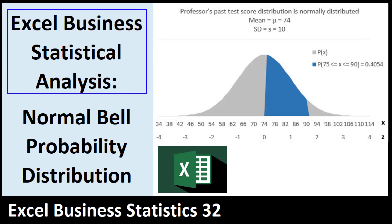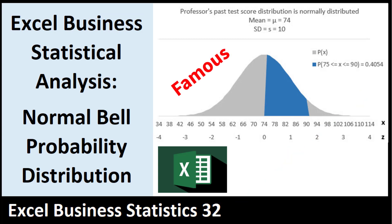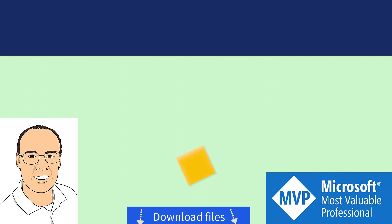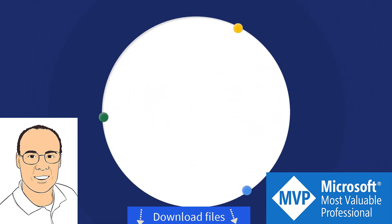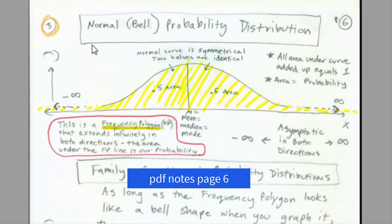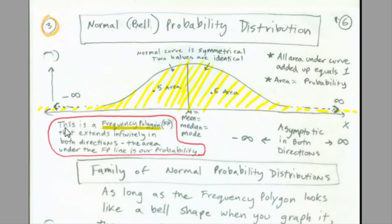Welcome to Excel Business Statistical Analysis video number 32. In this video, we get to talk about the famous normal Bell probability distribution. This video is going to be all about the normal or Bell probability distribution and this Bell curve.